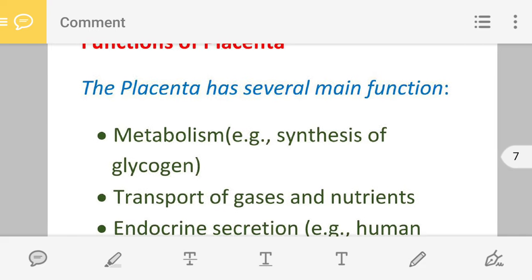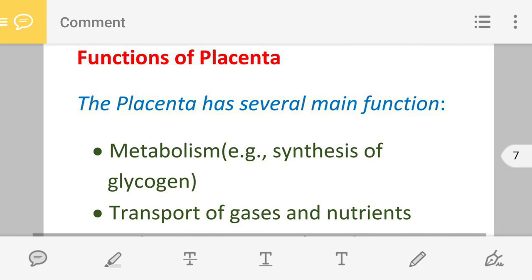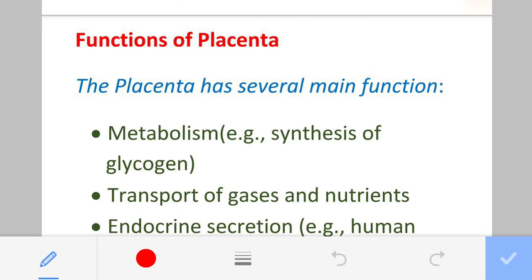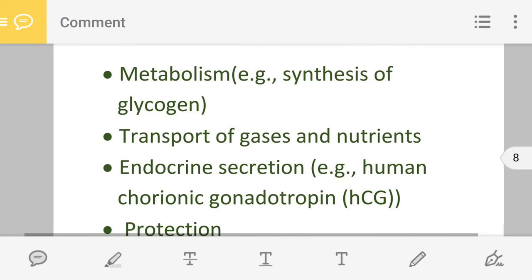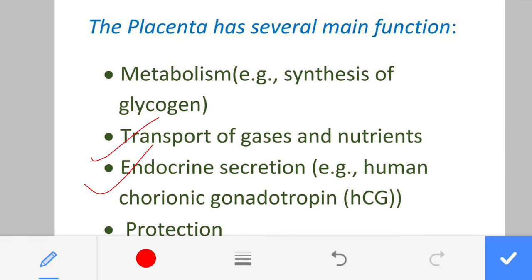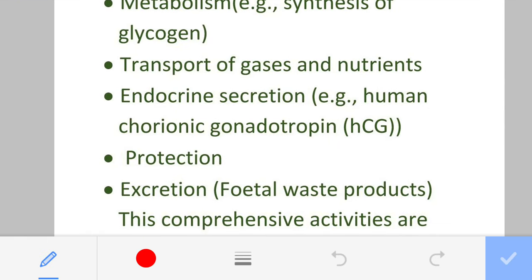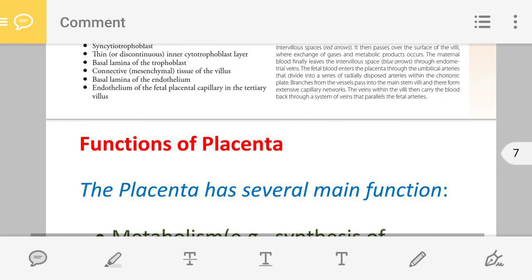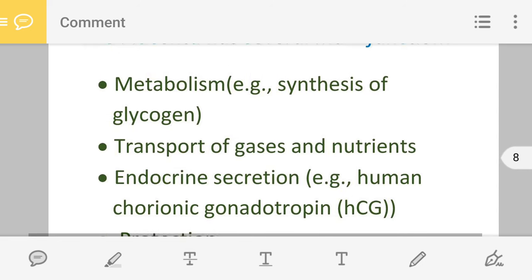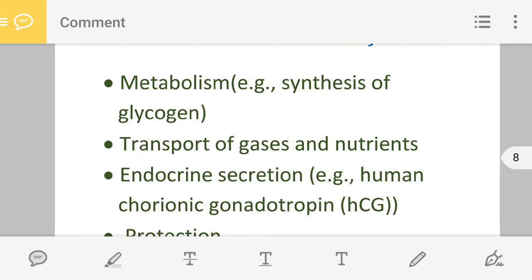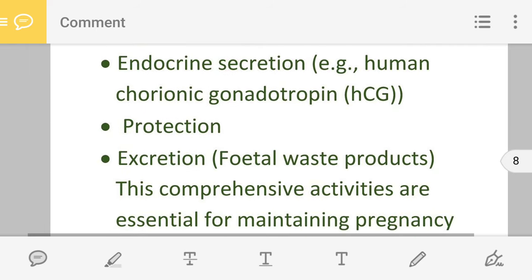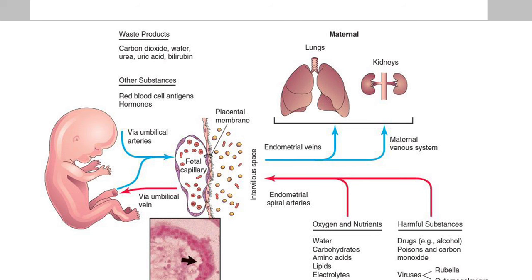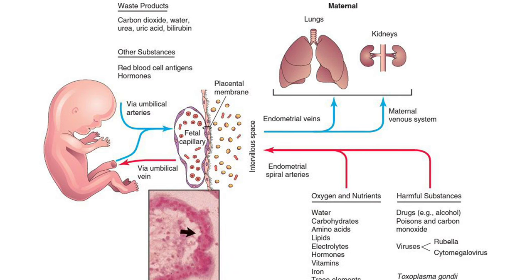Now coming to our main discussion — the functions of the placenta. The placenta performs various functions: metabolism, transport of gases, hormone production, protection, and excretion. I have included a concept map so you can easily prepare the functions of the placenta.